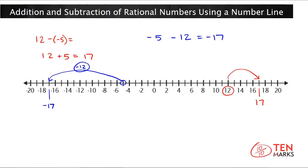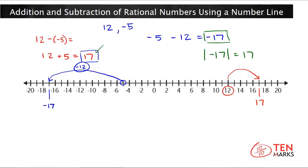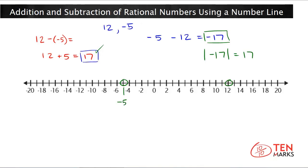I notice something interesting. In both cases, I'm working with the same two numbers: positive 12 and negative 5. When I did 12 minus negative 5, I got a difference of 17. When I did negative 5 minus 12, I got negative 17. If you take the absolute value of negative 17, you get positive 17 — the same answer as before. That's because absolute value represents the distance between any two numbers on the number line. The distance between negative 5 and positive 12 on the number line is 17, and if you count, you'll find there are 17 places between them.